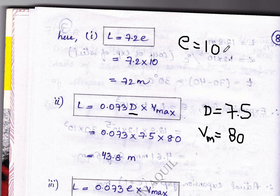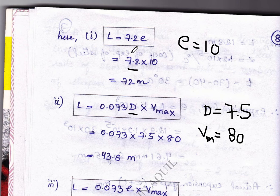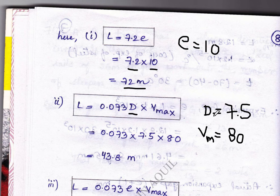Starting with the first condition: capital L equal to 7.2 times e, where e is 10 as given in the question. Substituting in the formula, 7.2 into 10 gives 72 meters. Next condition: L equal to 0.073 times D into V max, where D value is 7.5 meters and V max is 70 kilometers per hour.